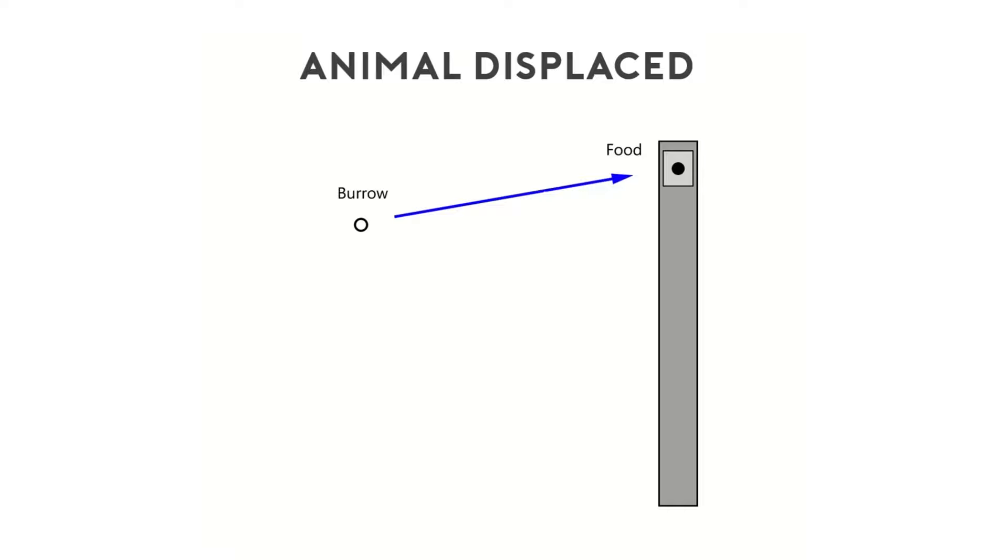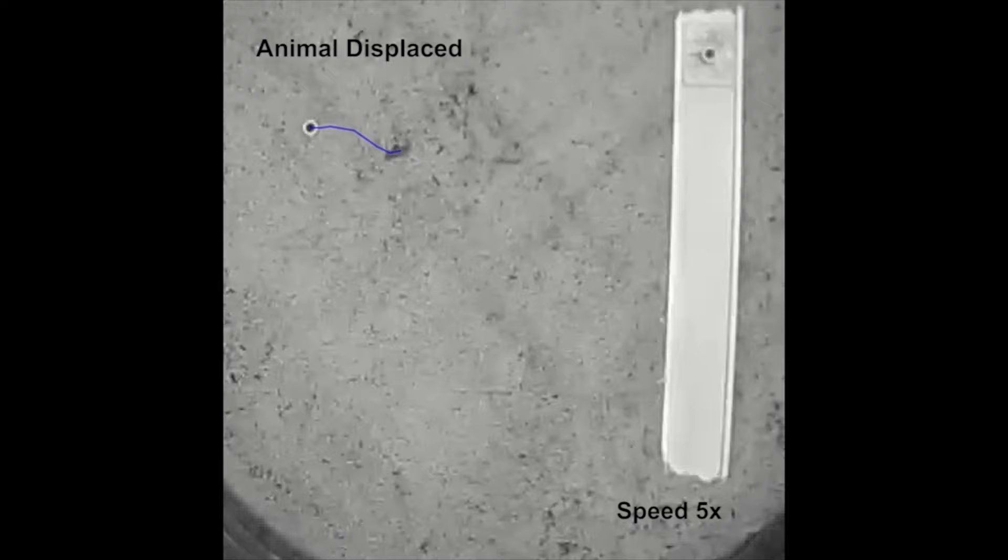To test if mantis shrimp were using path integration to return home, we displaced the mantis shrimp to a new location in the arena once they had found food placed on a track. If displaced mantis shrimp oriented their homeward paths parallel to those of animals that had not been displaced, this would indicate that they were using path integration to navigate home.